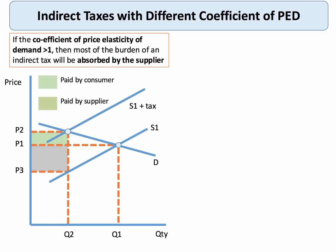Very quickly, I just want to take you through a bit of revision on indirect taxes. An indirect tax increases the costs of producers and causes an inward shift of supply. The tax is the vertical distance between the supply curves. In our example here, supply and demand is fairly elastic and the price goes up from P1 to P2 — that's paid by the consumer. However, the total amount of tax is the vertical distance between the two supply curves. Although the consumer is paying the increased price, the producer has to absorb most of the tax when demand is elastic.